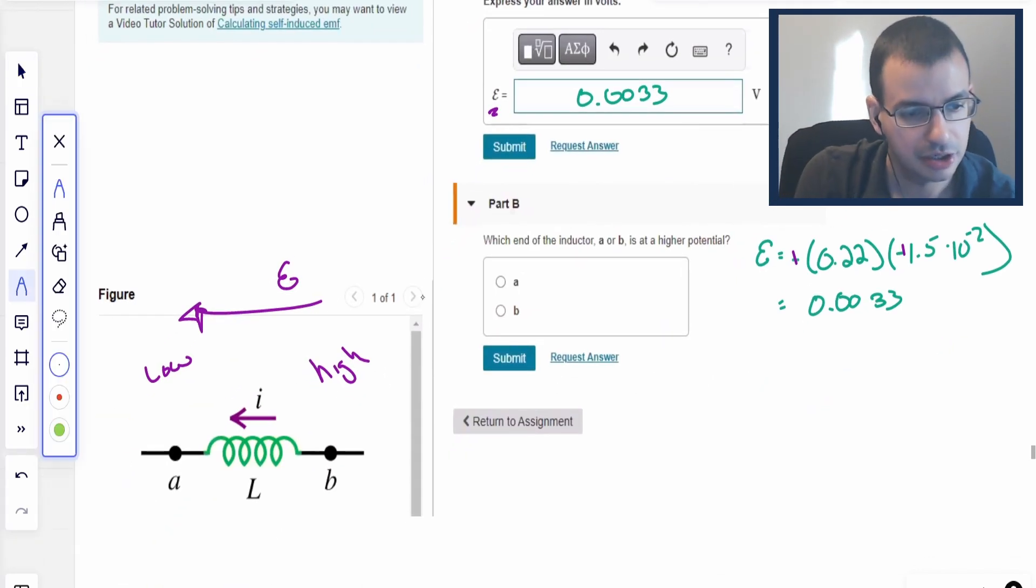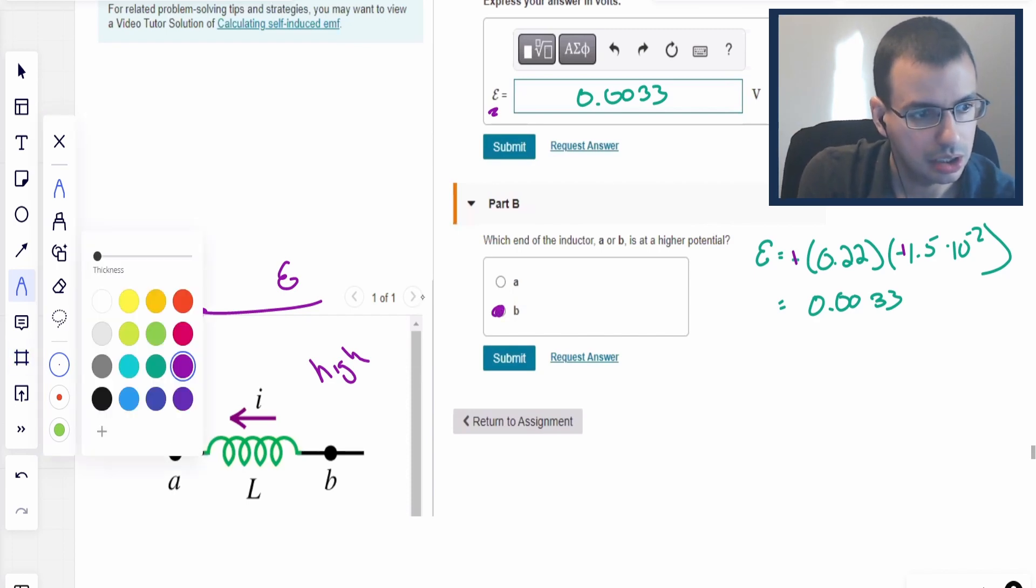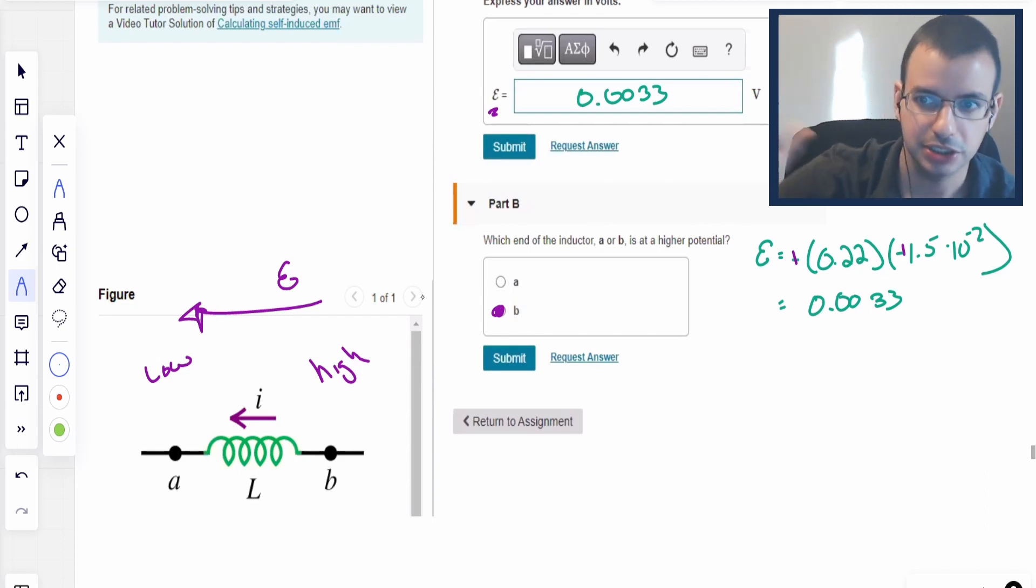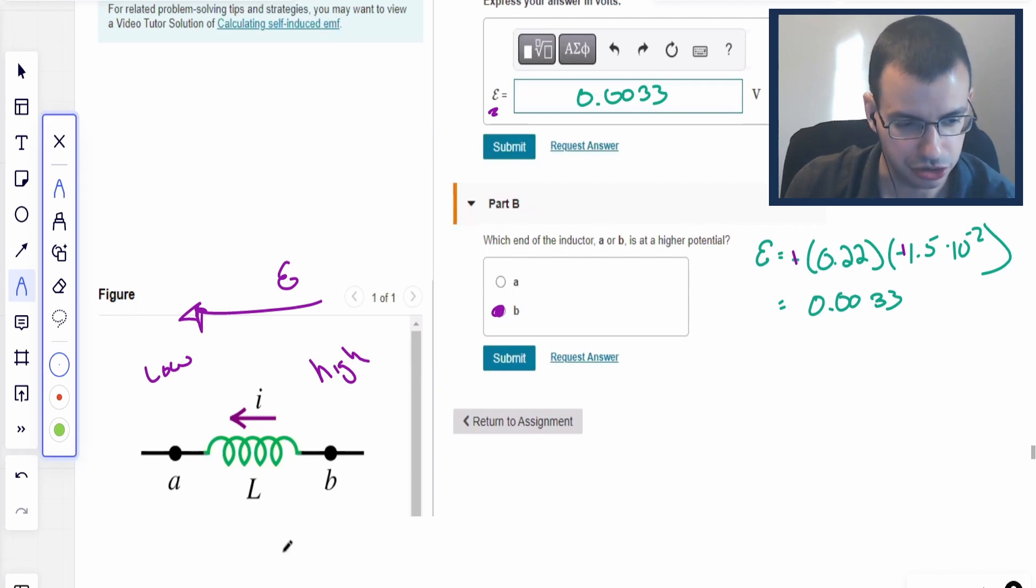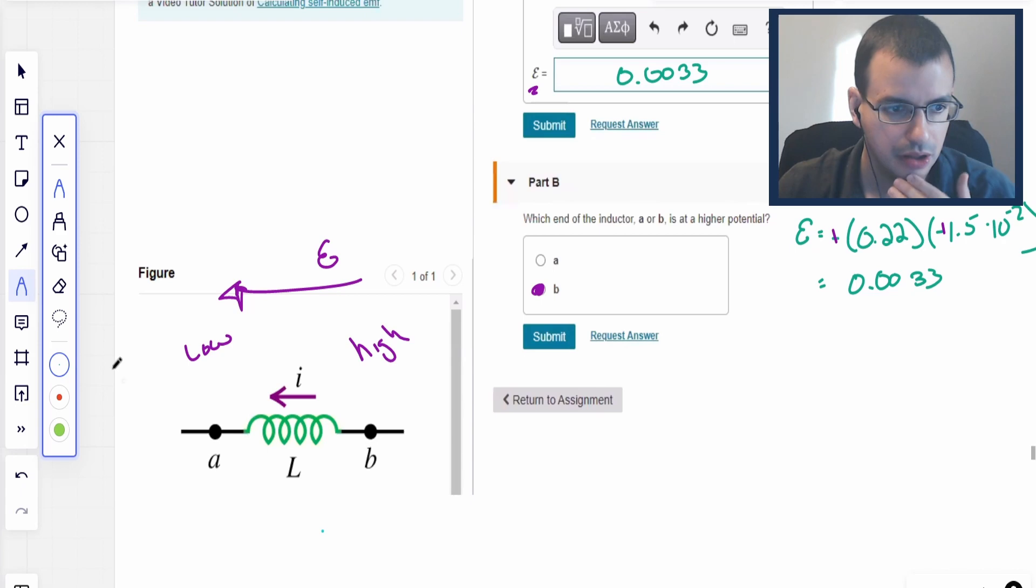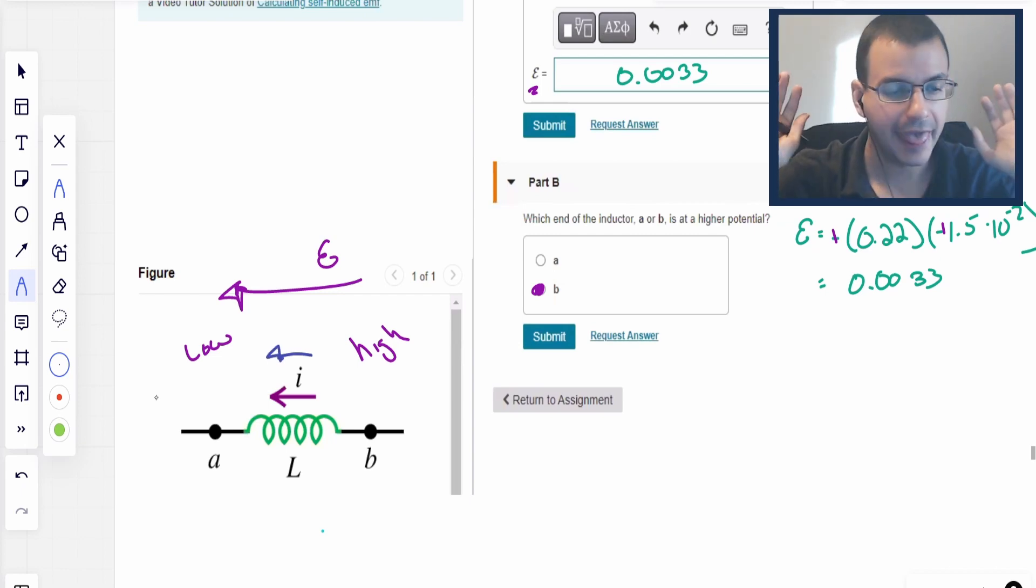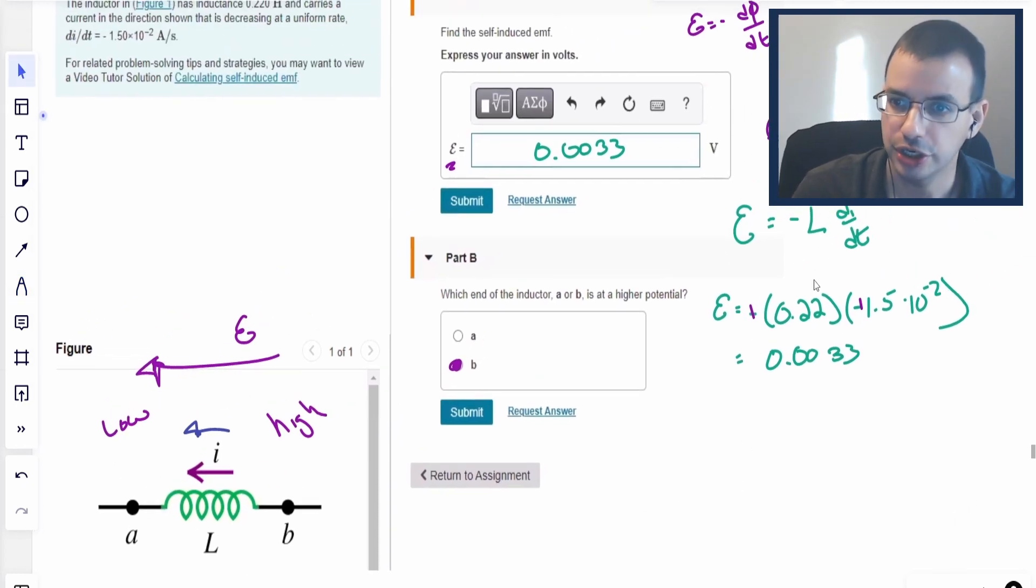One human performance trap you could fall into easily, which is understandable, is when we say which end of the inductor, a or b, has the higher potential, your first thought is that b has to be higher potential because current is flowing this direction. If current is flowing that direction, current flows from high to low, and that is pretty much always true, and it is true in steady state. But if you look at the math, that's not always true according to this equation.